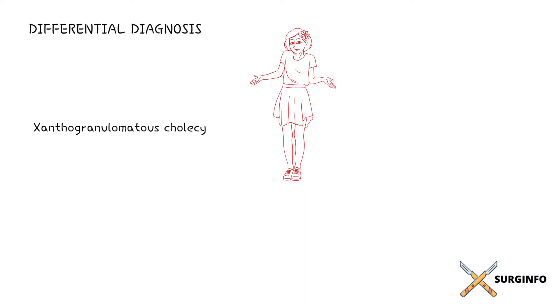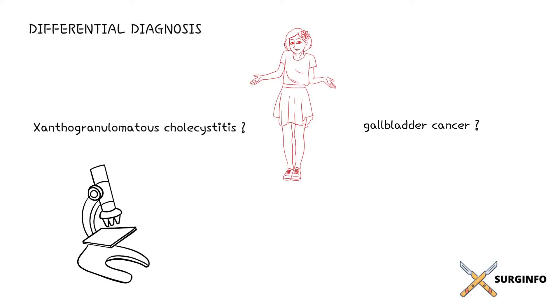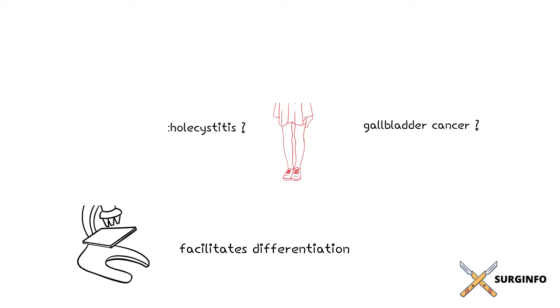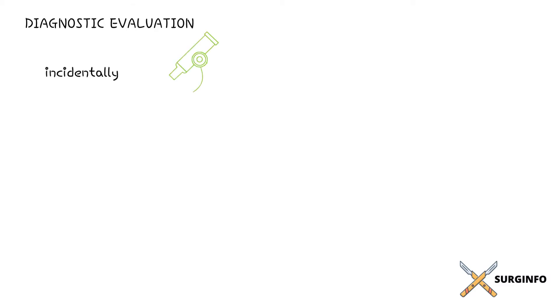Xanthogranulomatous cholecystitis may be confused for gallbladder cancer in its clinical presentation and radiographic appearance. Histopathological evaluation of the gallbladder usually facilitates differentiation of these disorders, although rarely the two can occur together. The clinical presentation can be similar to that of acute cholecystitis; however, the imaging findings are distinct. The diagnosis is often made incidentally on histological examination of the resected gallbladder in a patient with suspected acute cholecystitis.